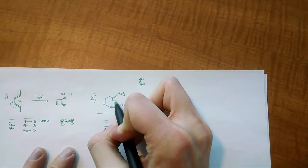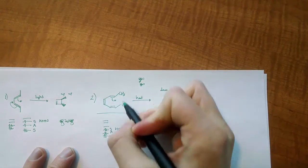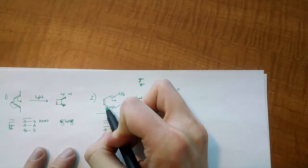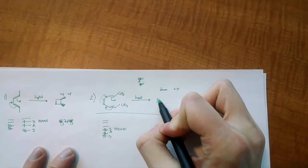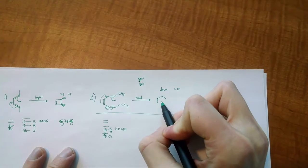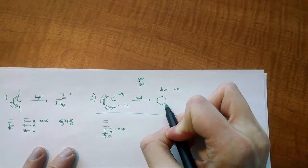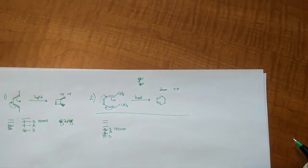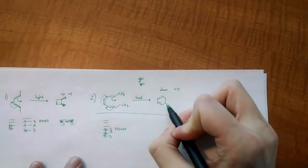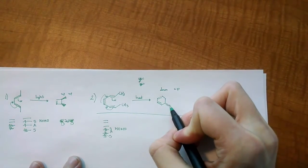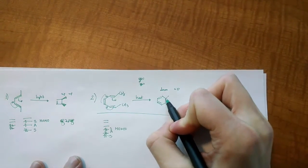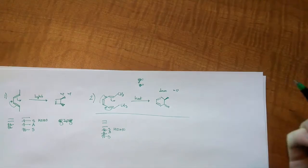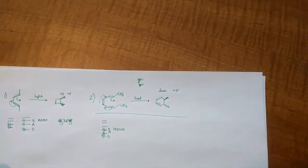Now we draw the mechanism. This will move in, form the new bond, this will move over, this will move over. So we're going to get a six-membered ring this time, with two double bonds over here. This one was going down and this one was going up. Again, you're going to have the down-up product.